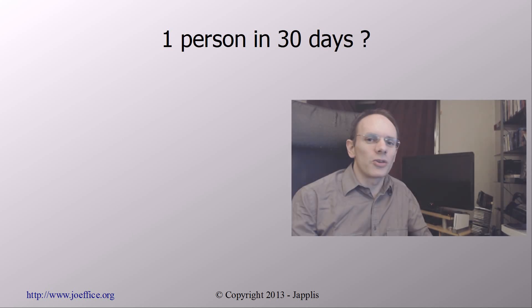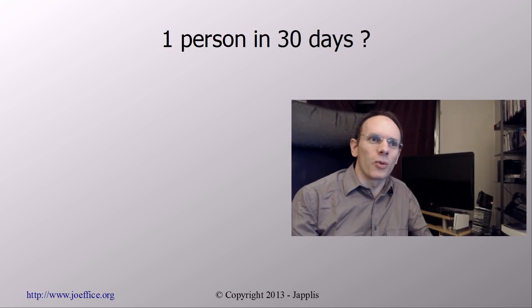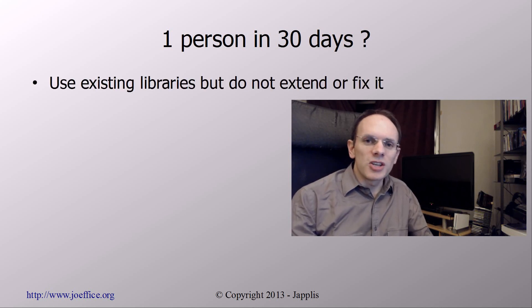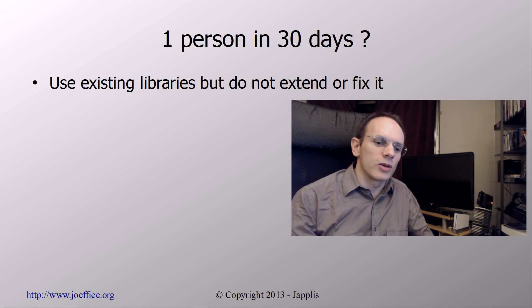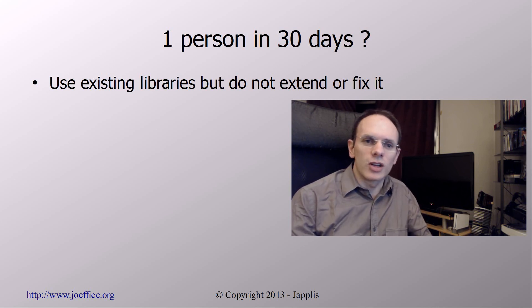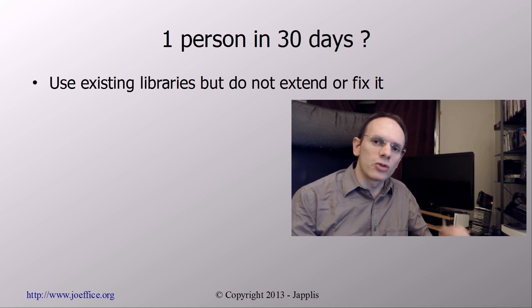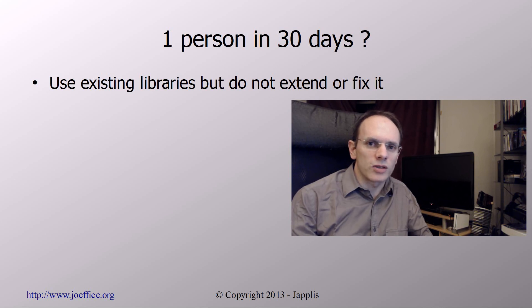You're probably wondering how it's possible — one person in 30 days writing an office suite in Java. First, I'm going to reuse existing libraries, but I'm not going to extend them. So if a feature is missing from a library, I won't take the source code, modify it, and create a bug. If it's not supported by the library, then I won't do it. That means I should be flexible in the things I'm going to include in my office.